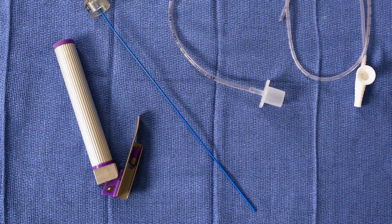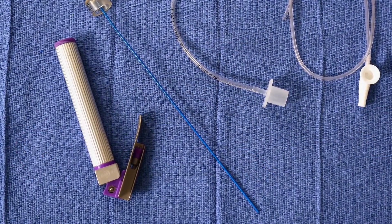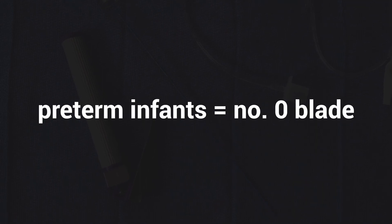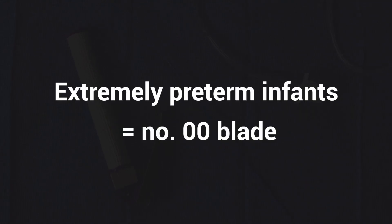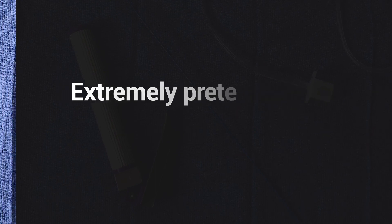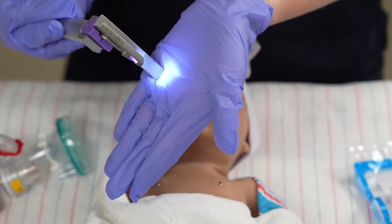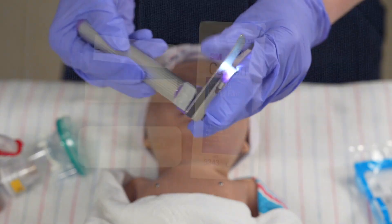Select the correct laryngoscope blade. Use a number one blade for term infants, a number zero for pre-term infants, and a double zero for extremely pre-term infants. Turn on the blade light and ensure the batteries and light are working.